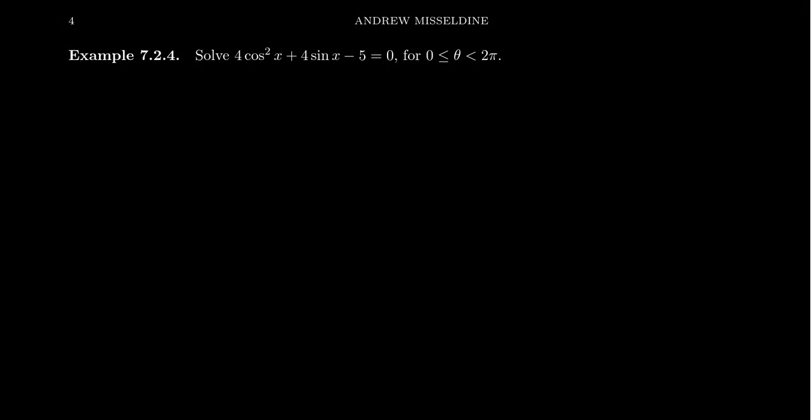In our lecture series, we've seen many instances where we had to solve a quadratic trigonometric equation with a quadratic polynomial in terms of cosine or sine. What if you have a mismatch, though? Like here, you have 4cos²x + 4sinx - 5 = 0.